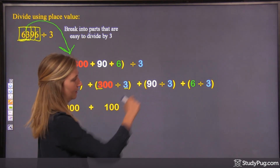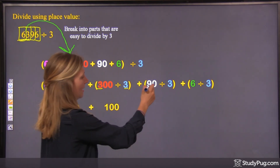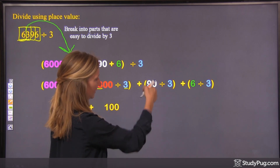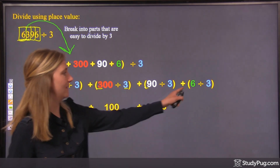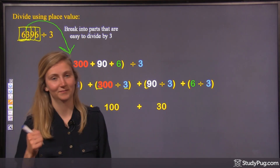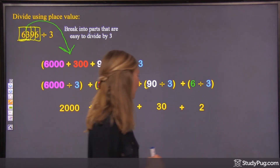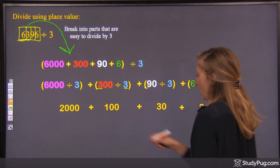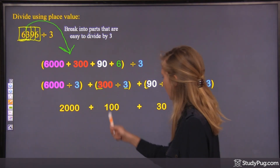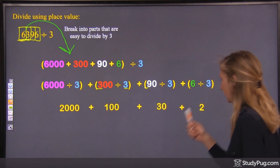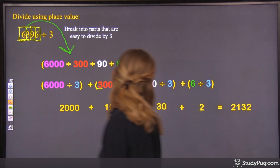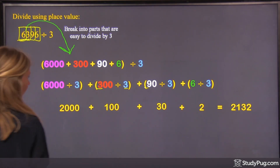90 divided by 3: 9 divided by 3 is 3, with one zero — so 30. And then lastly, 6 divided by 3 is 2. Now we're just going to add those all up: 2,000 plus 100 plus 30 plus 2. You get 2,132.